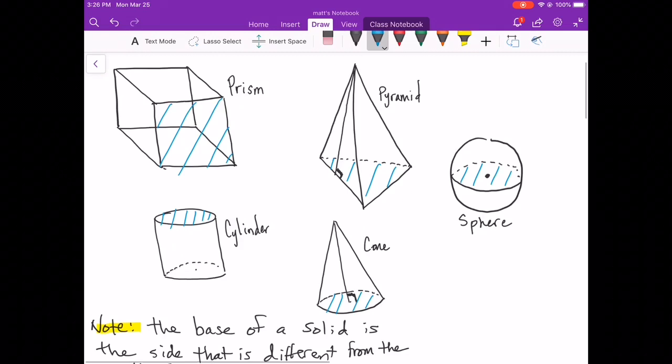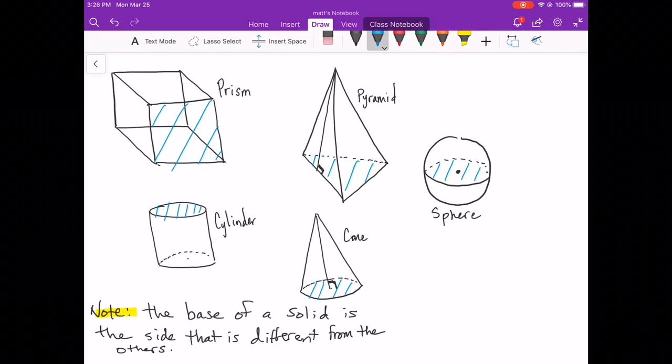One thing that I do want to point out to you is that the base of a solid is the side that is different from the others. So the cylinder is a great example because you know that middle section, it's almost like you've taken a rectangle and you've bent it to wrap around that shape, but the two circles, the cone is a similar thing, that circle, there's no other shape that looks like that so it's almost like the base stands out. It's not always the surface that the solid is sitting on, it's the shape that's different. So that's what helps you name and find surface area and volume of these solids.